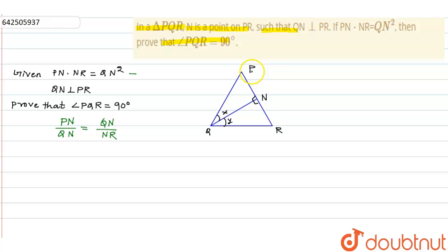So what is PN? PN is this, QN is this, QN is this, and NR is this. Now we can see